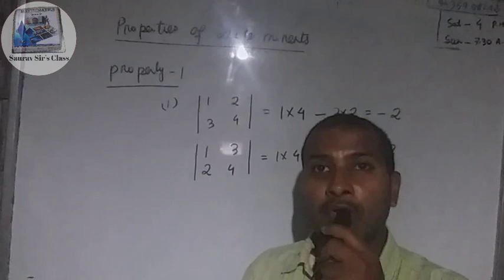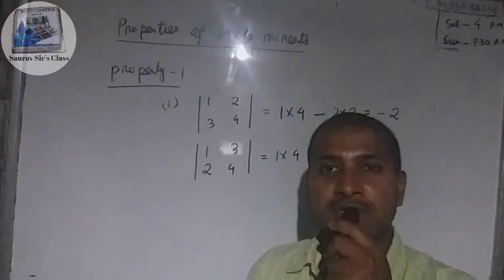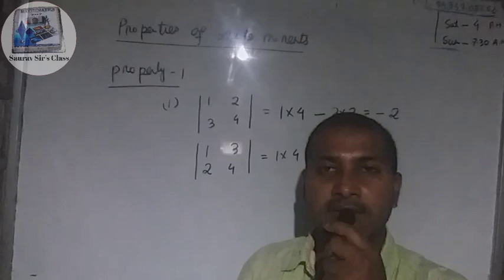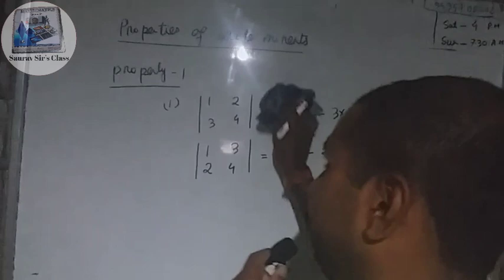So the first property is confirmed: if we interchange the rows and the columns, the value of the determinant remains the same. Now let us discuss the second property.